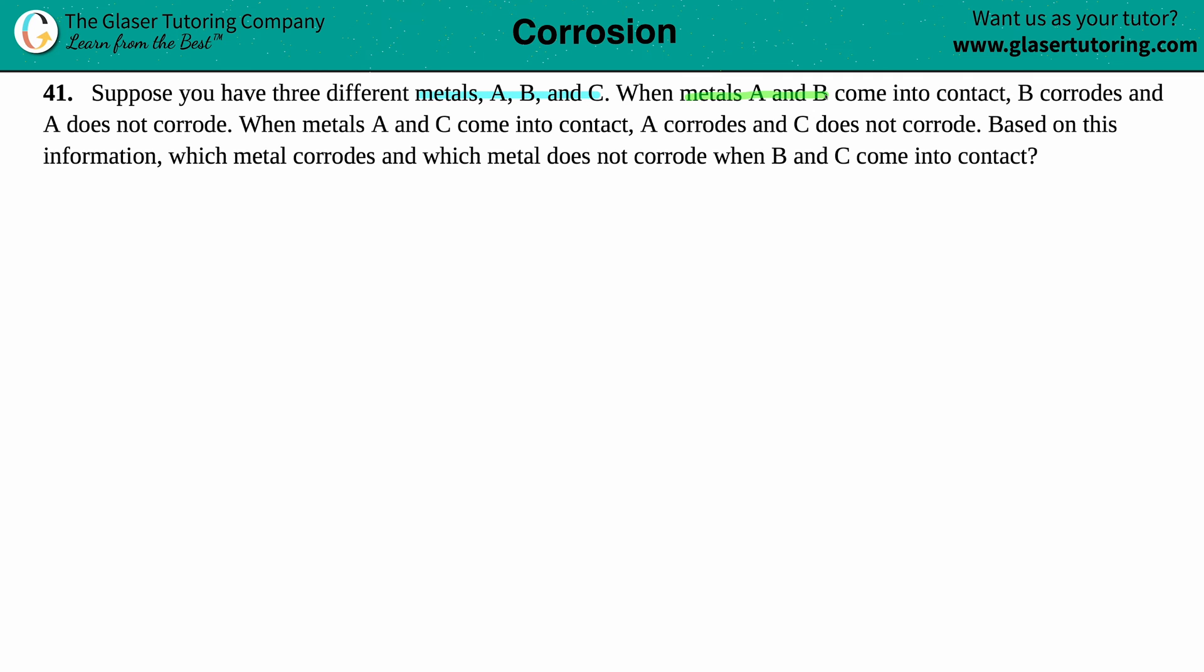When metal A and metal B come into contact, B corrodes and A does not corrode. But when metal A and C come into contact, A corrodes and C does not corrode. Based on this information, which metal corrodes and which metal does not corrode when B and C come into contact?